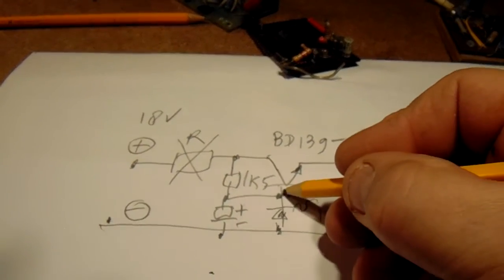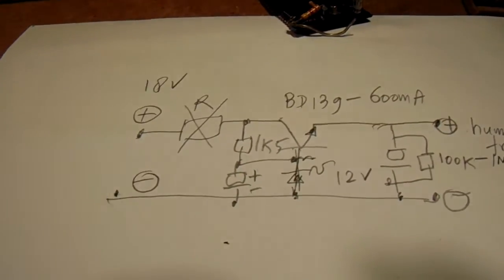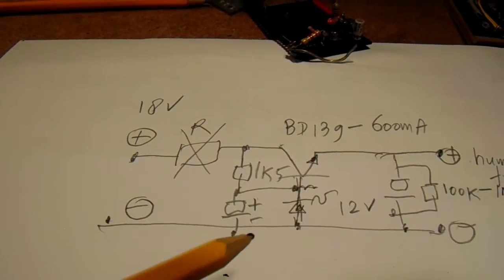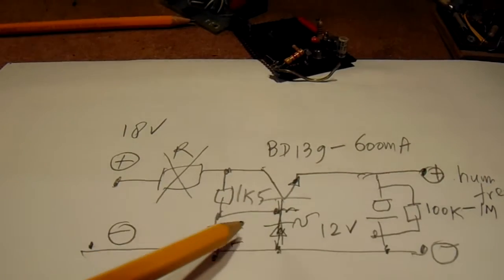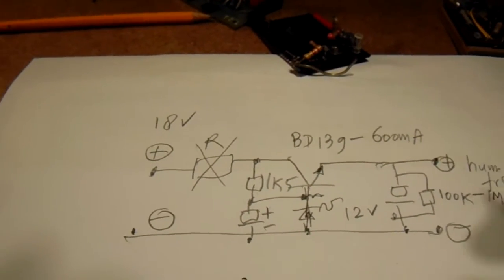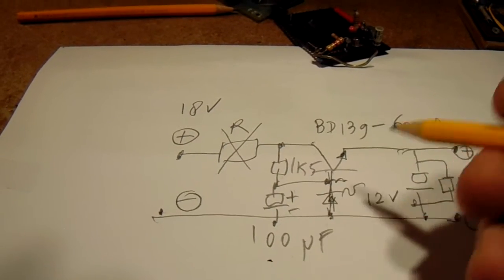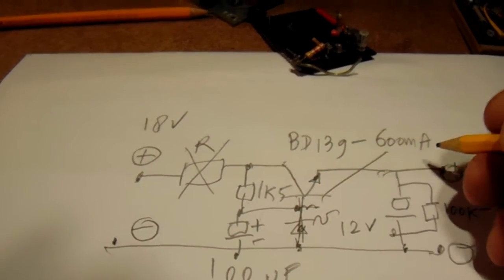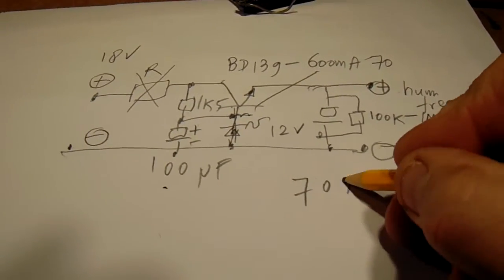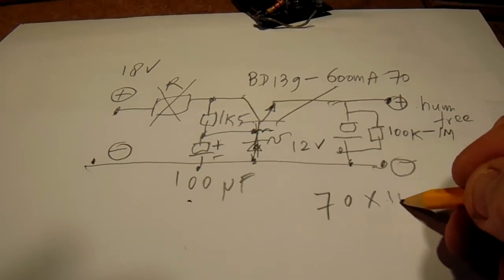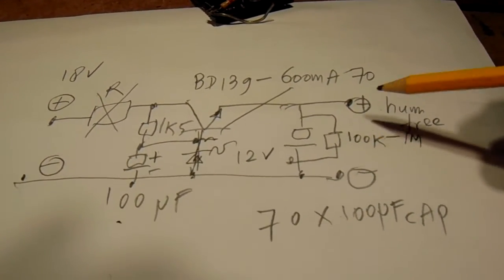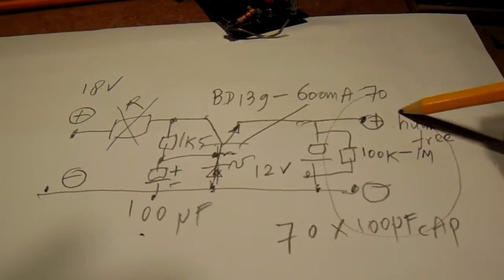that the amplification factor plays an important role and you may multiply the value from this cap here by the amplification factor from this transistor. So when the cap is 100 microfarad and the amplification factor is 70, we have 70 times 100 microfarad cap.